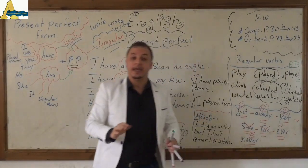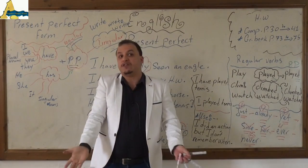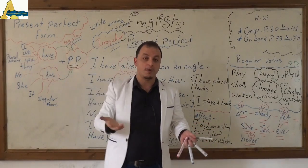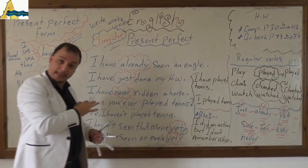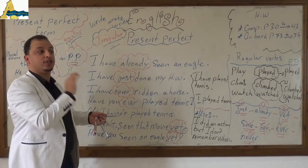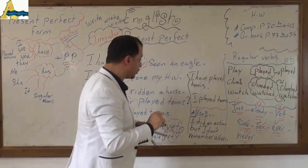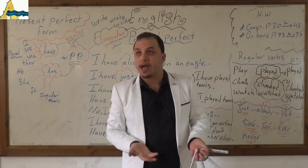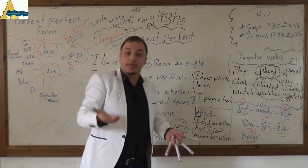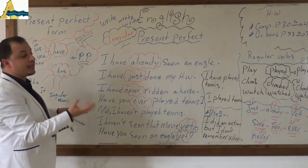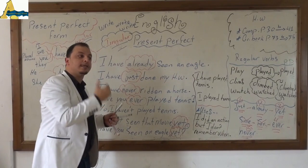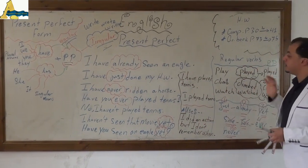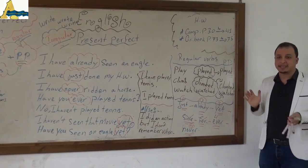Look at 'already': I have already seen an eagle. Did I say last week? Last year? No — I didn't say anything about when. You can figure out it's in the past — a past action — but without a specific time figure. This is the present perfect use: once in the past, but I don't remember the time.